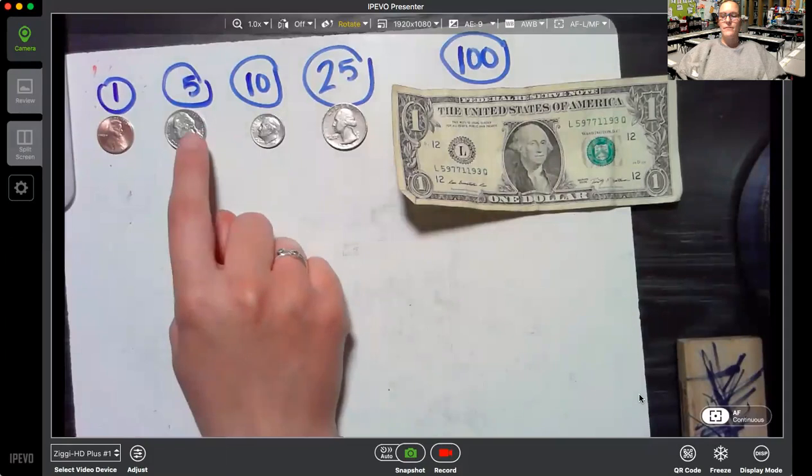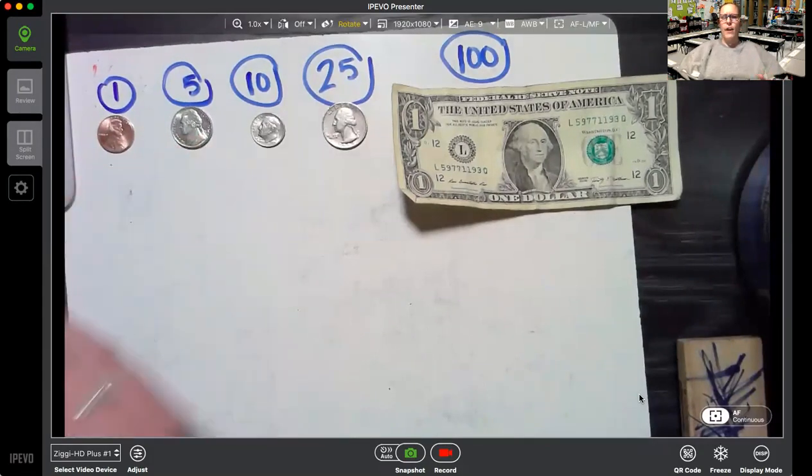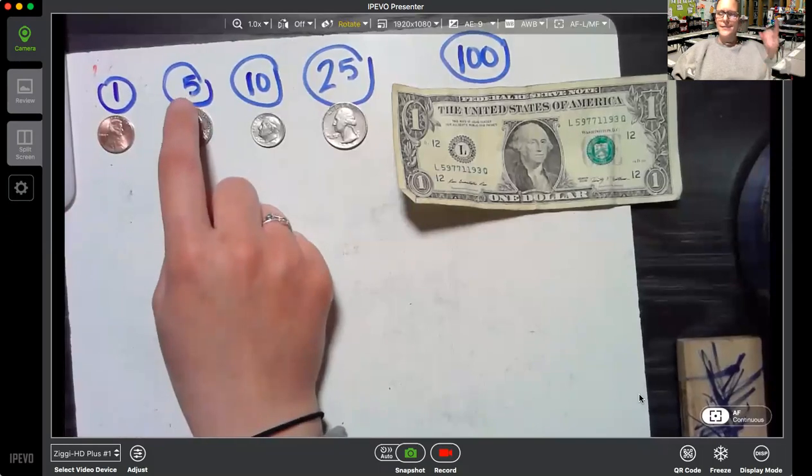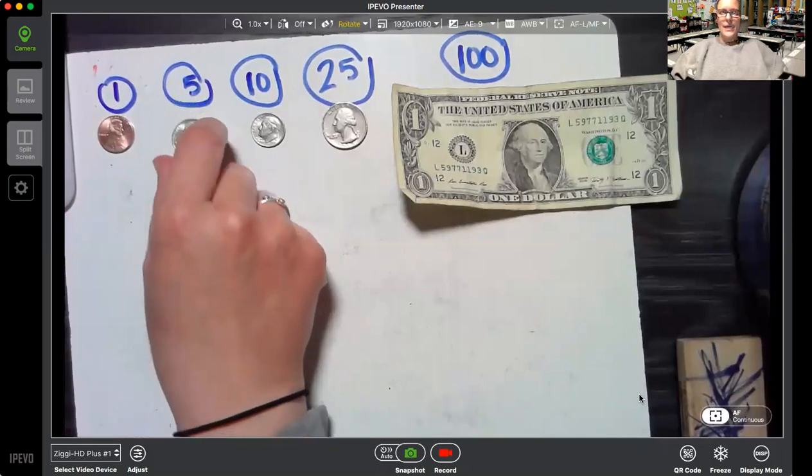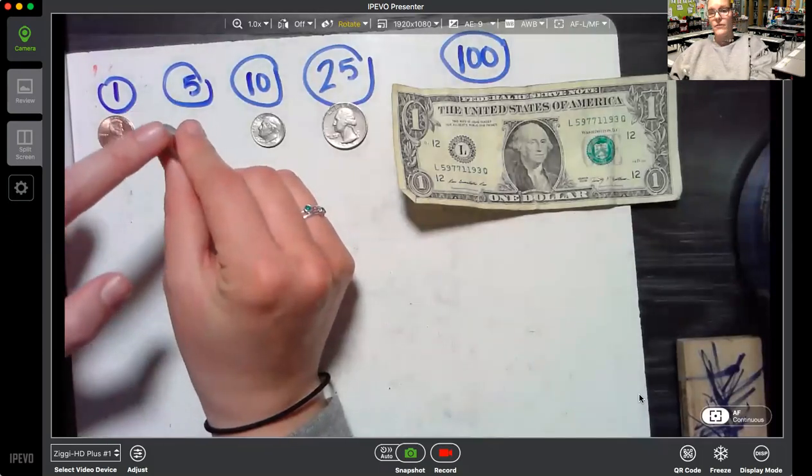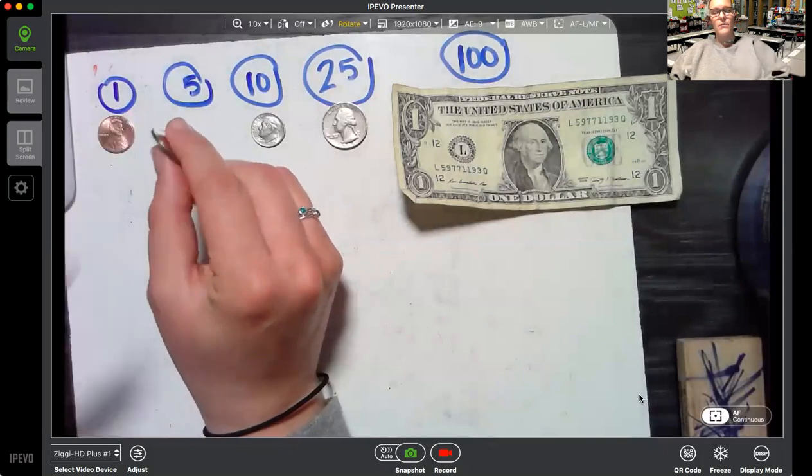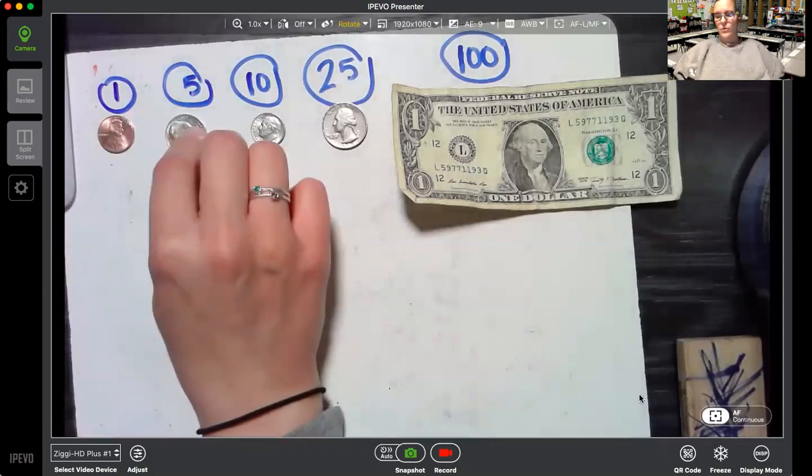Next we have the nickel. Nickel, nickel, thick and fat, worth five cents. I know that. And the nickel doesn't have any rough edges. It's the smooth coin on the side. It's an easy way to remember which one is the nickel.